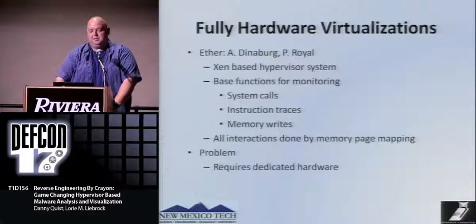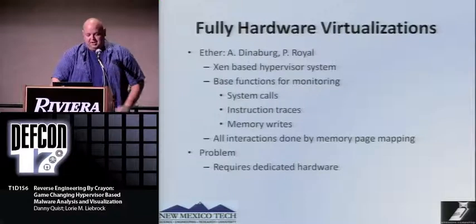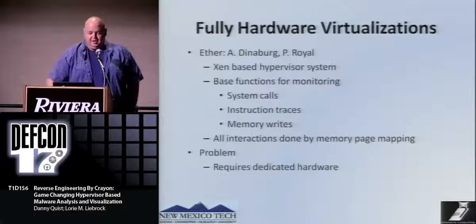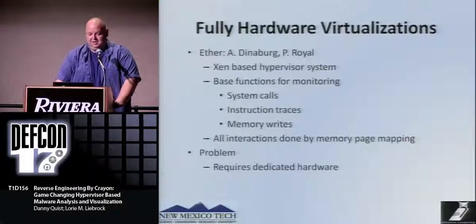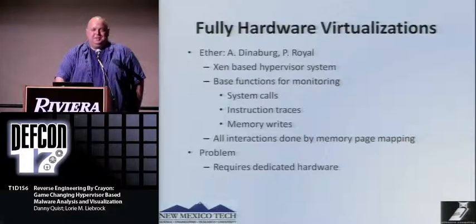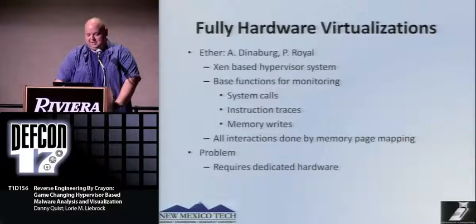Now we get into the awesome. There's a fully hardware virtualization monitoring system called Ether, built by Artem Dinaburg and Paul Royal from Georgia Tech. It's a Xen-based hypervisor system. Ether monitors system calls, instruction traces, memory writes, and all interaction with the OS via the shadow page table inside the Xen hypervisor. The only 'problem' — which isn't really a problem — is that it requires dedicated hardware, but what it buys you is an actual VM environment that's very flexible.